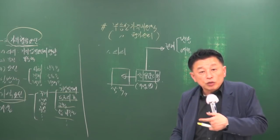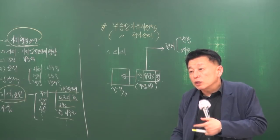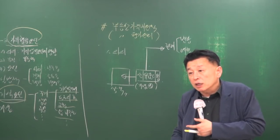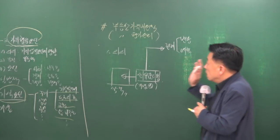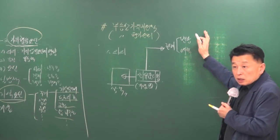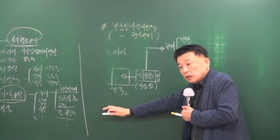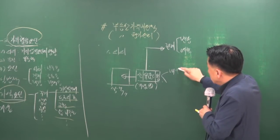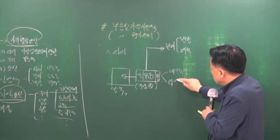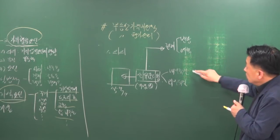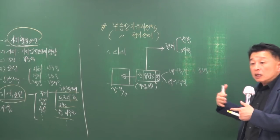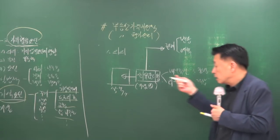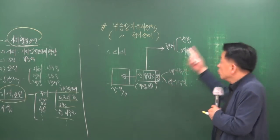연기군이 행정도시로 바뀌면 농사짓는 것이 최유효 이용이었던 것이 주거나 상업적 용도로 바뀌면서 가치도 달라집니다. 평가사가 5억으로 판정했을 때는 지역의 변화를 예측해서 감안한 것입니다. 이 최유효 이용 상태를 기준으로 내부 측면에서 내부 구성요소 간의 균형 여부와 외부 측면에서 주변 환경과의 적합성 여부를 고려해서 가치를 평가하며, 이 원칙들이 부동산 가격 제원칙으로 설명됩니다.